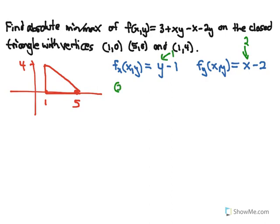Setting both partial derivatives equal to 0, we can see that will only happen when x is 2 and y is 1, so the point (2, 1) is a critical point. Because we're just finding absolute min or max, we don't need to do the second derivative test — we just need to find the value. So f(2, 1) equals 3 plus 2 times 1 minus 2 minus 2 times 1, which gives us 1.